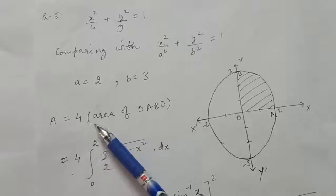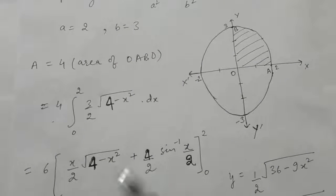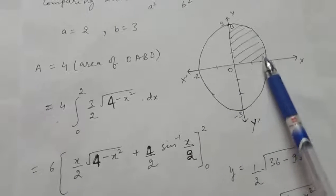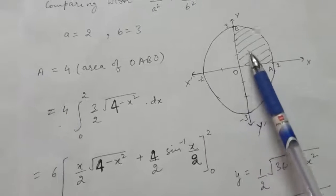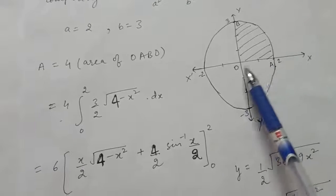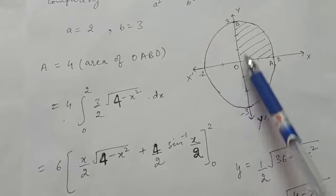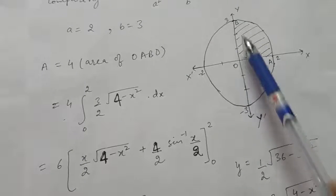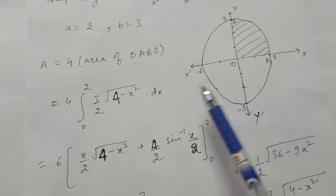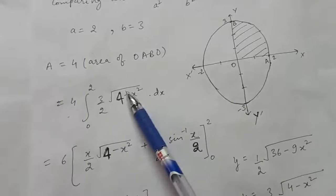The total area equals 4 × (area of region OABO). To find the area of this region, take the limits from the x-axis, that is from 0 to 2, or from the y-axis, from 0 to 3. Taking the limits of the x-axis from 0 to 2, the function will be in terms of x.